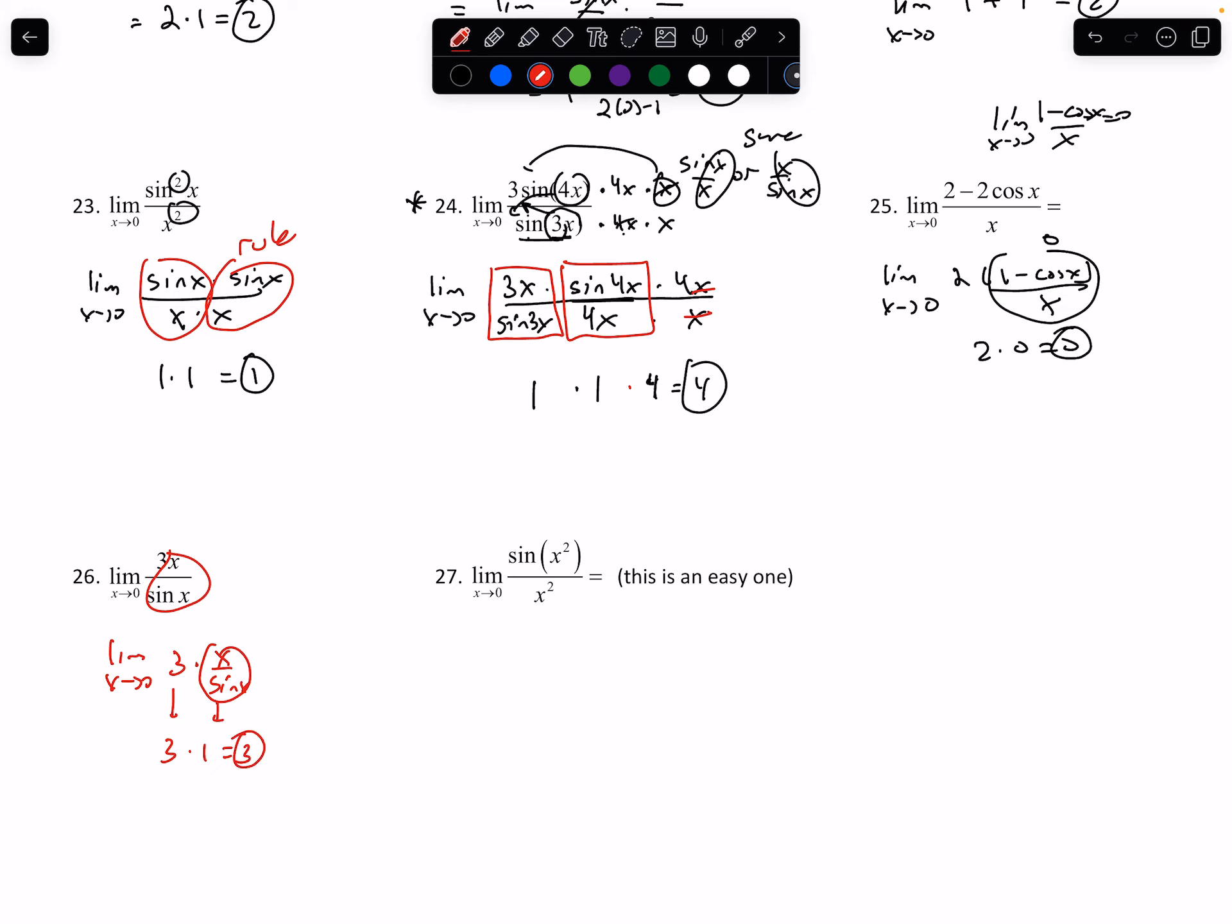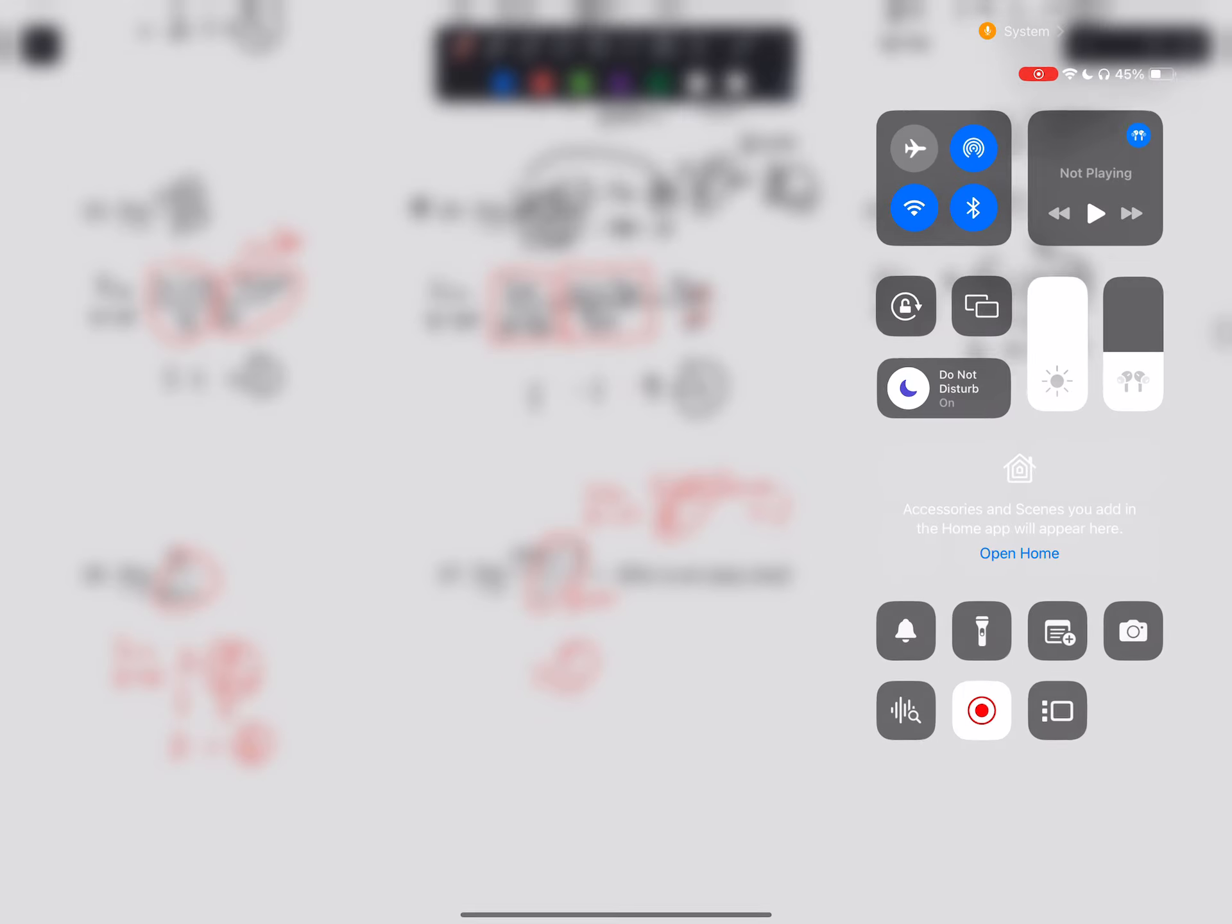27 is easy. This is just our sine of x over x. Remember, as long as those are the same, it's just 1. As, of course, x approaches 0. So these are the same. So therefore, this is just 1. All right. Hope you enjoyed that video. I'll see you guys in class or whenever. Have fun. Bye.